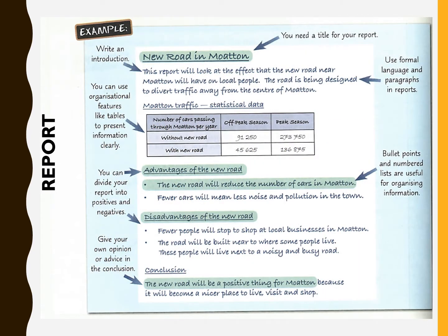Then there's a report, which you need to know about for the reformed Functional Skills exam. It has a title and an introduction — for example, 'This report will look at the effect that the new road near Moton will have on local people' — and then a conclusion. You can also include subheadings and even a table to present information clearly. Bullet points are acceptable in a report, but examiners don't really like them in articles.